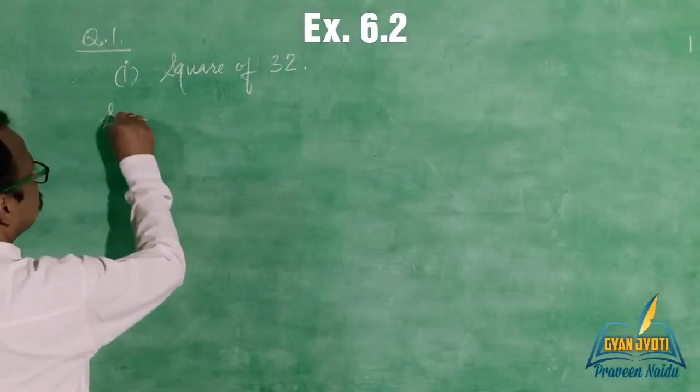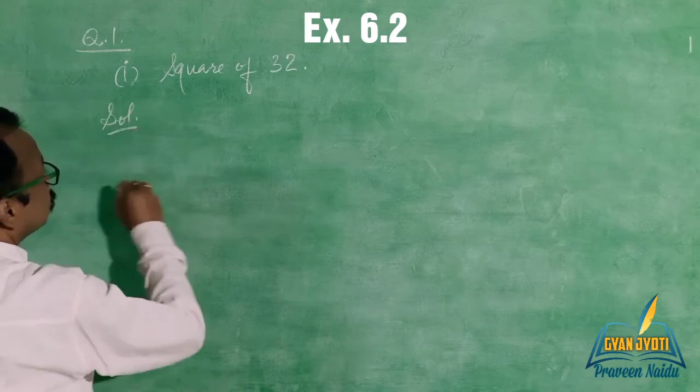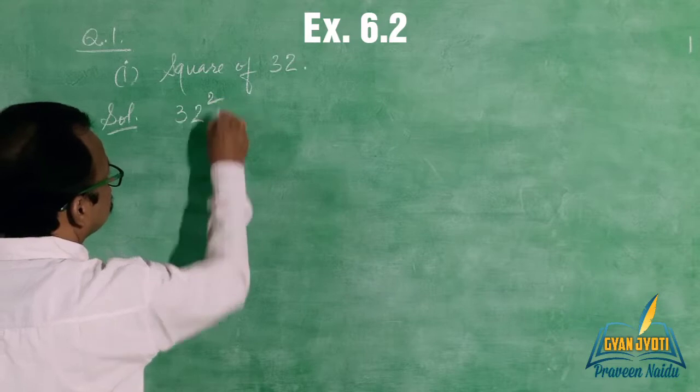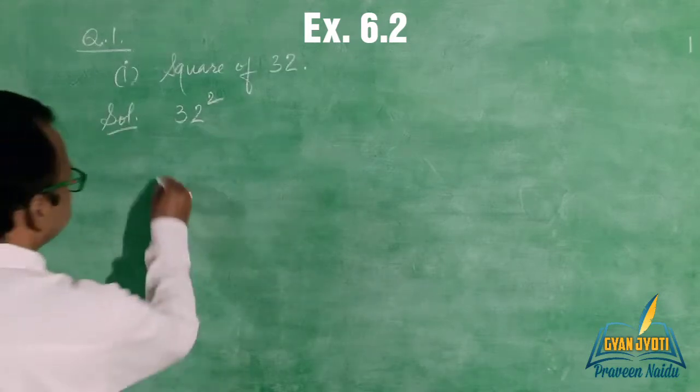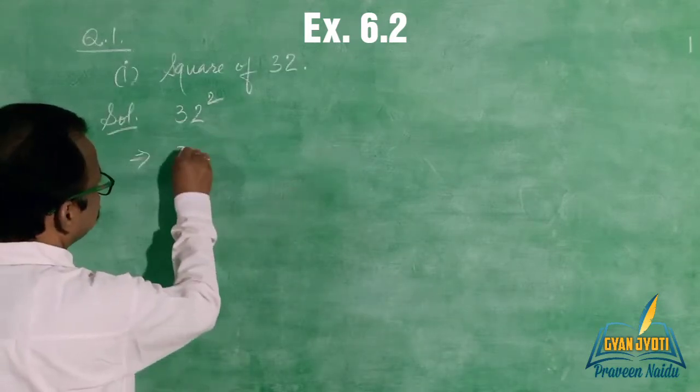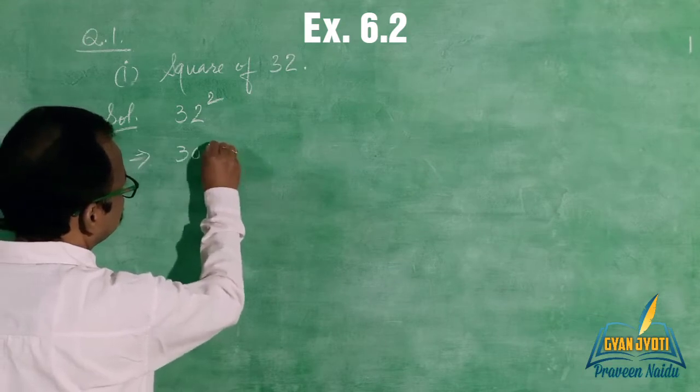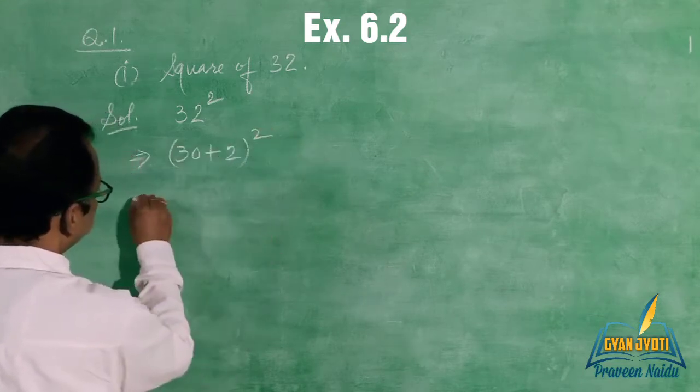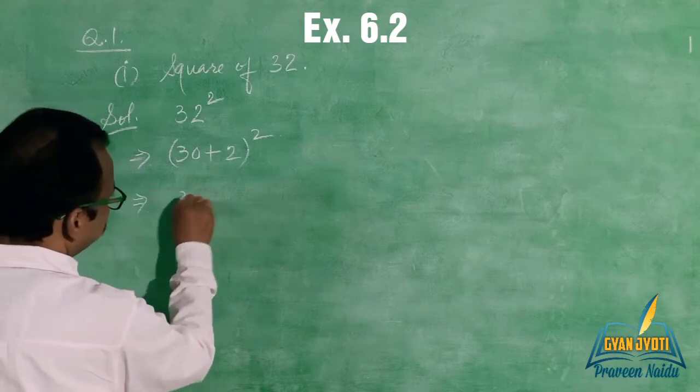In this question we are going to find the square of the given number 32. The square of any number is the product of the number by itself, but in this method we are not going to find the product using usual multiplication. We are going to solve in some other way.